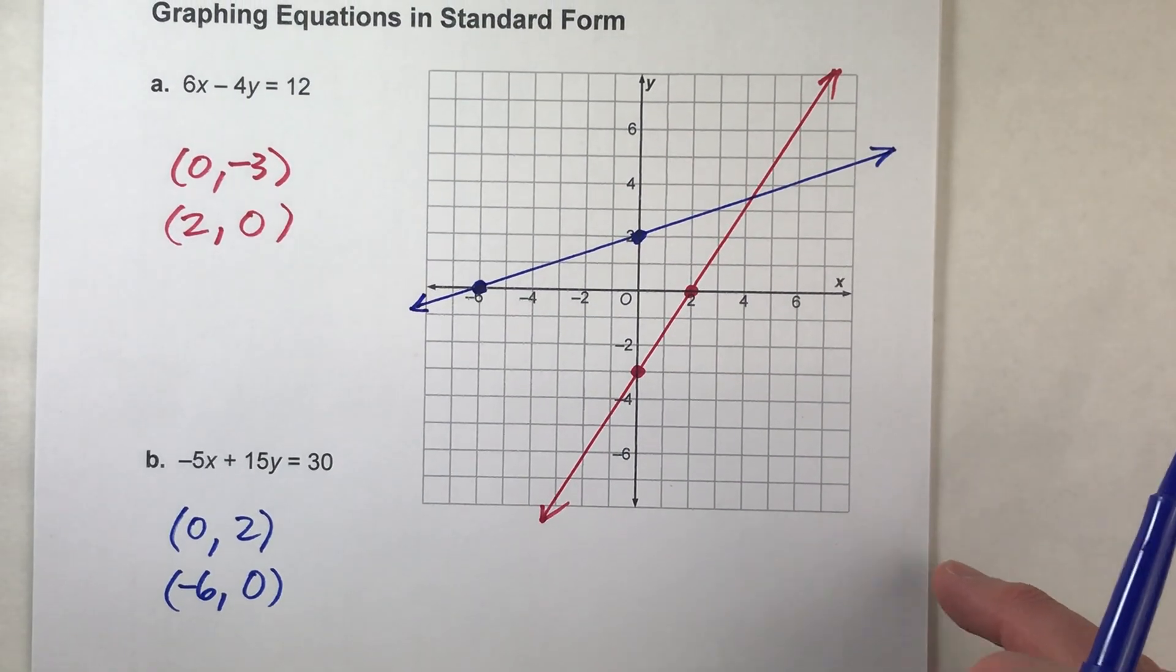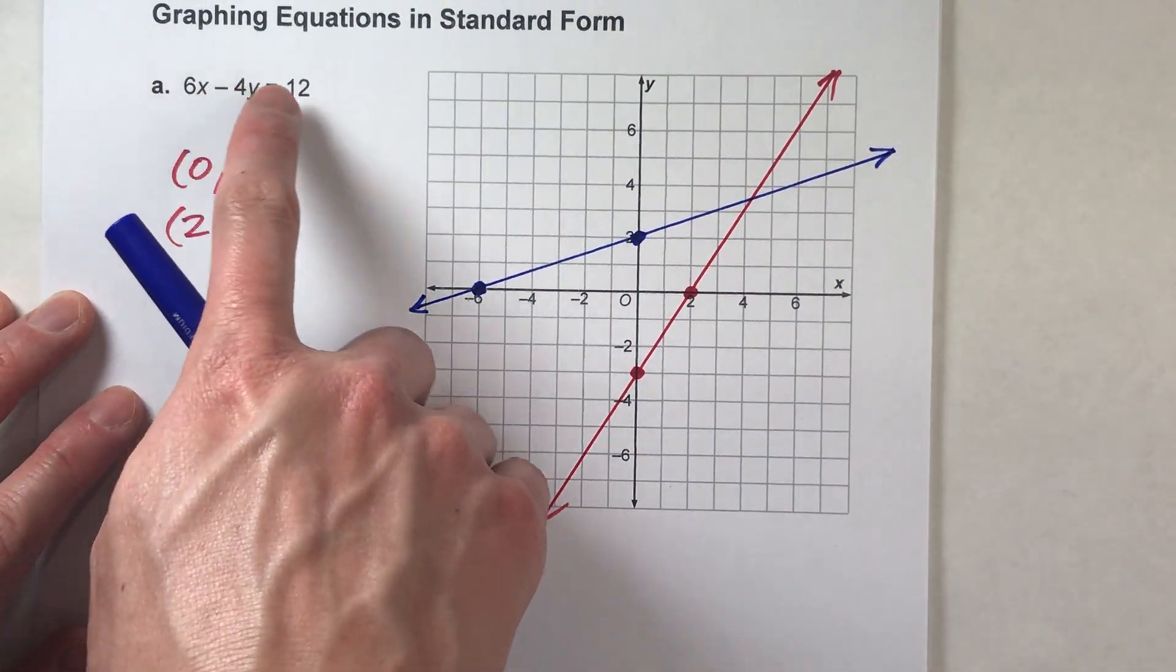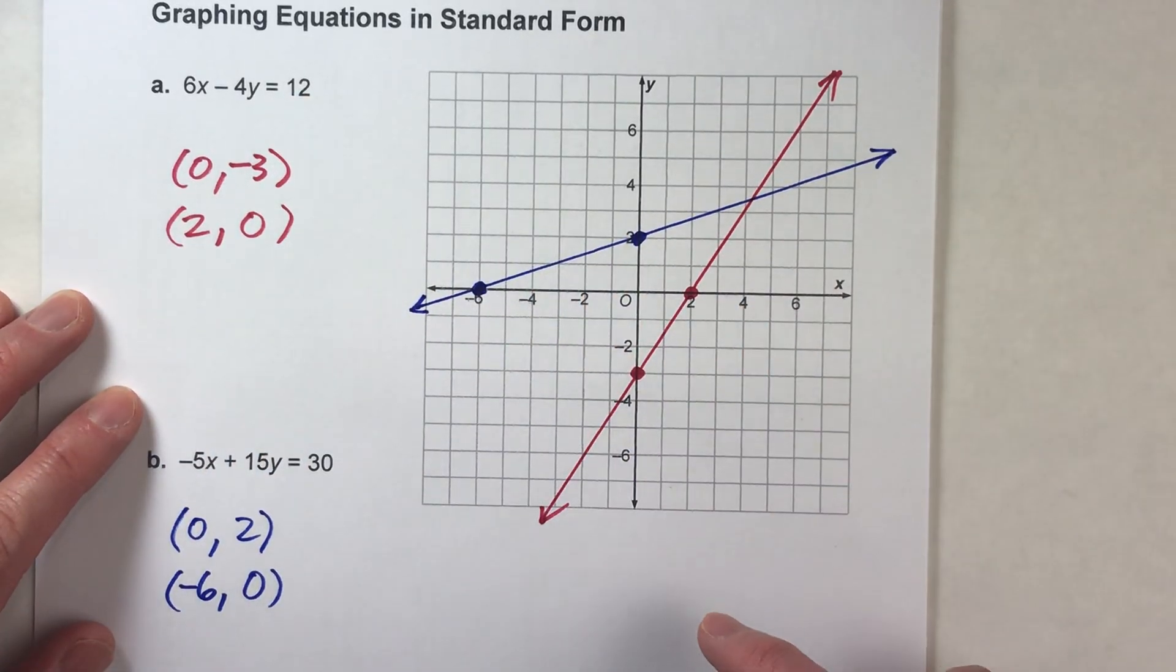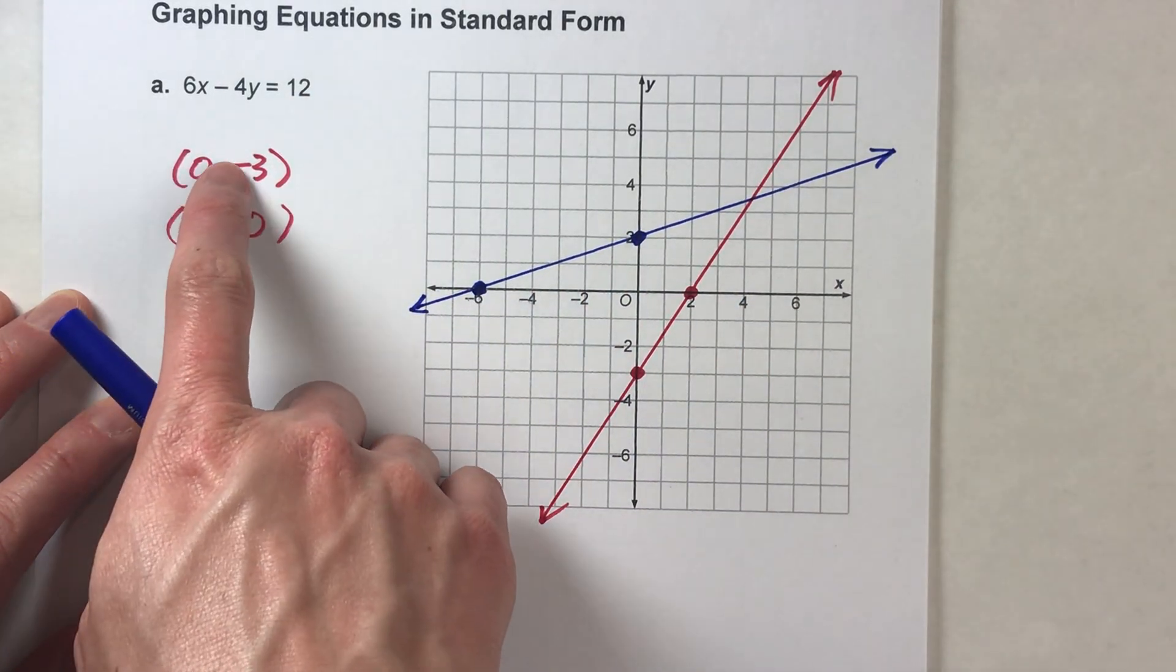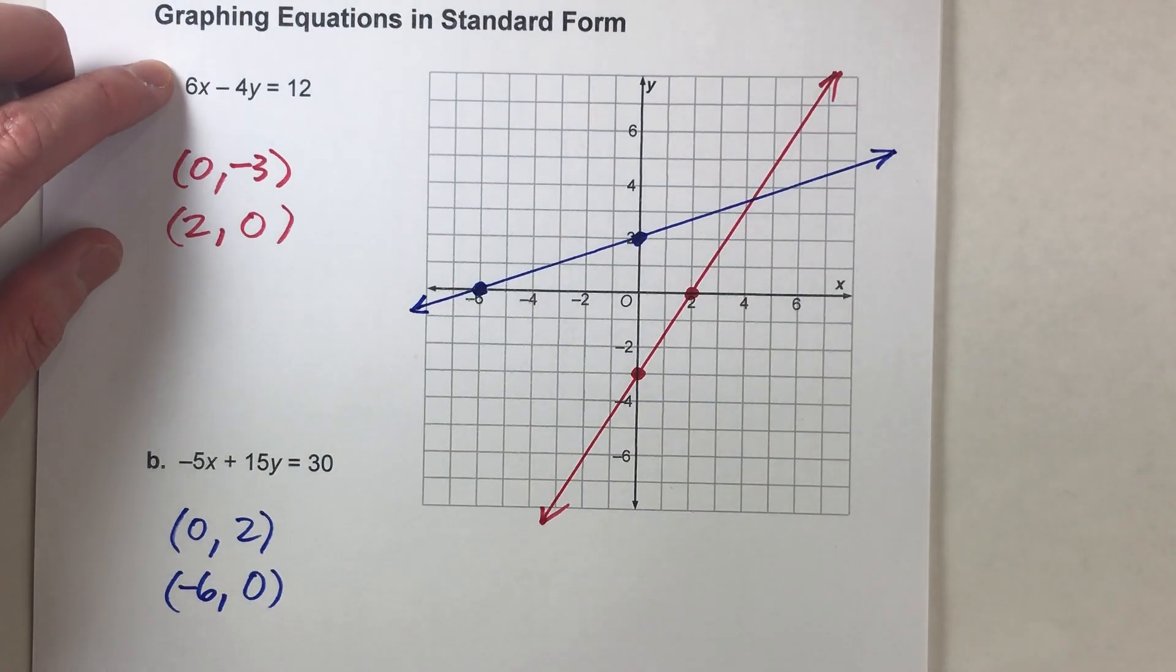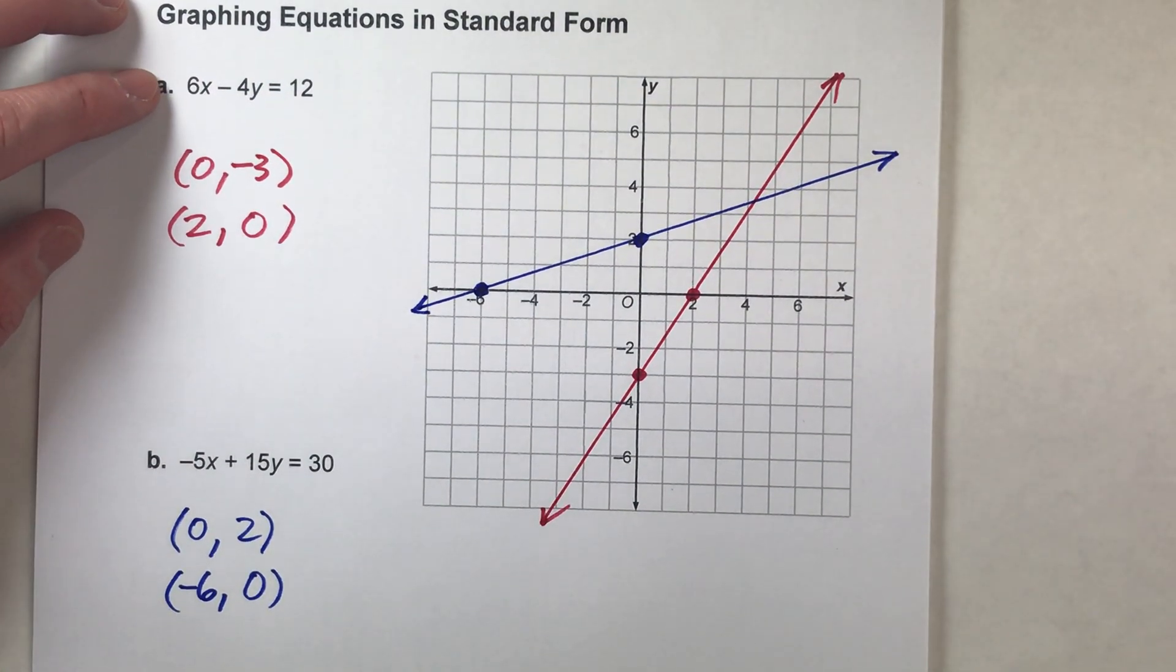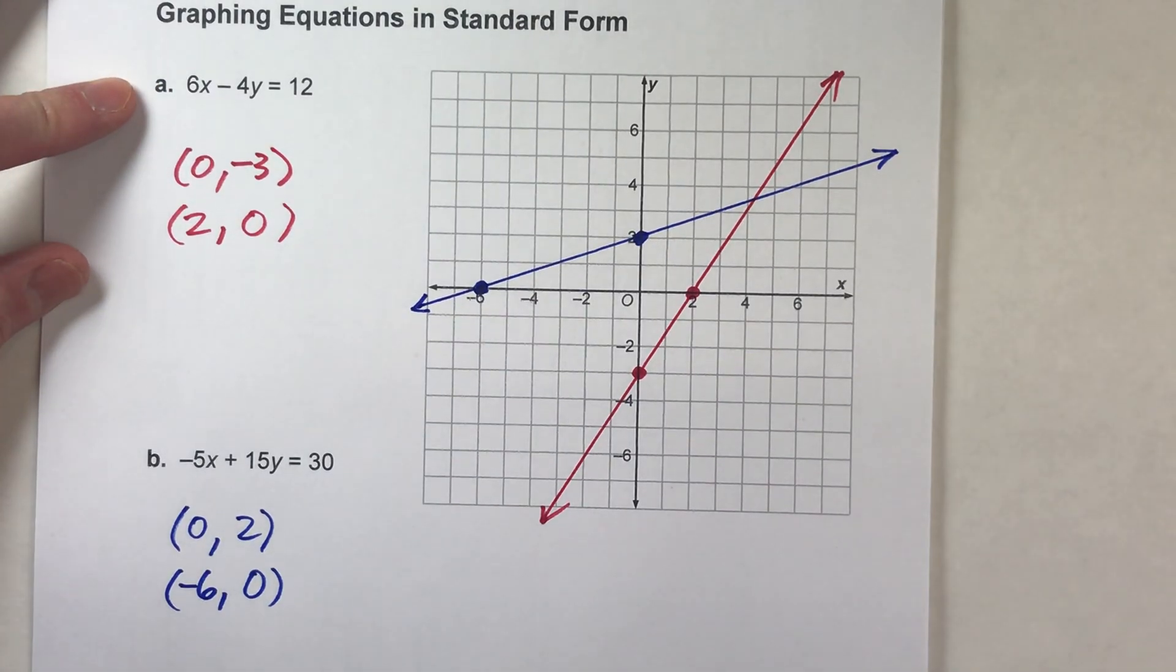So here's the thing, though. Remember, you can find any combination of an x and y that make your equation work and plot it on here to draw your lines. But the intercepts are always the easiest ones to find because making one of your variables zero makes the equation easier to figure out for the other number.